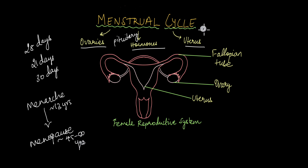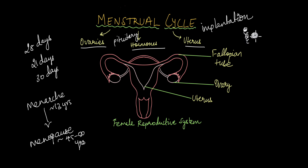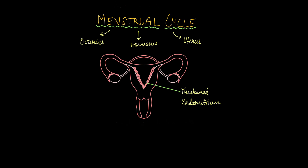The entire reason this menstrual cycle occurs is for implantation of the embryo. The uterus has three layers: the innermost is known as the endometrium, the middle one is known as the myometrium, and the outermost is known as the perimetrium. It is in the endometrium that the embryo gets implanted, so it needs to be thickened, and to make that layer thicken, you need different hormones to be involved.